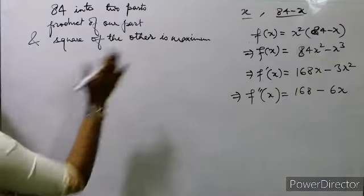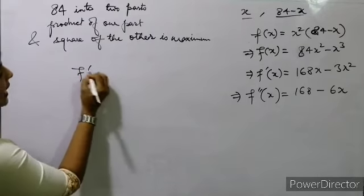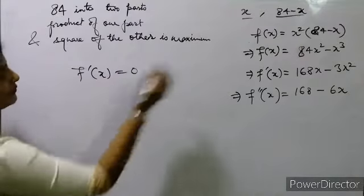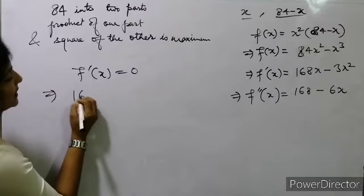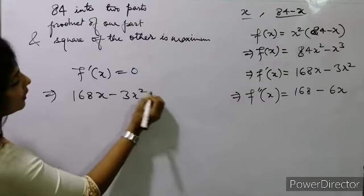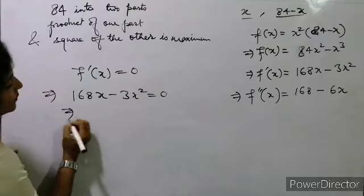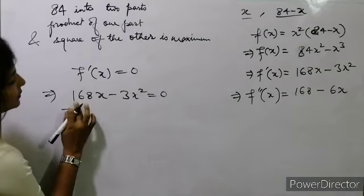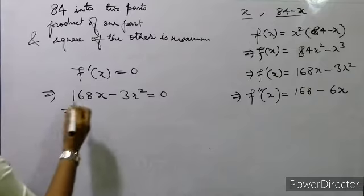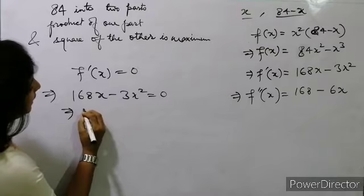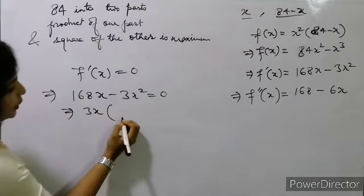It is given that area is maximum, so for maximum value f'(x) should be equal to 0. f'(x) = 168x - 3x² = 0. This is divisible by 3, and x is also common, so we take 3x common to get 3x(56 - x) = 0.